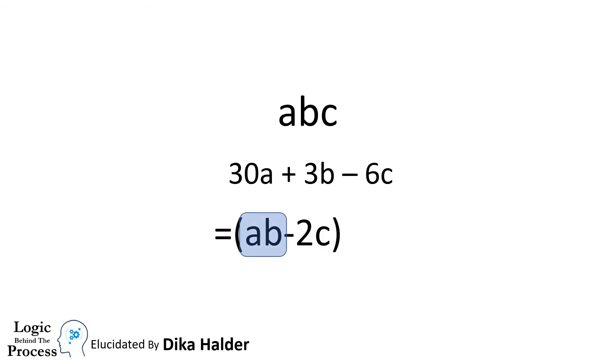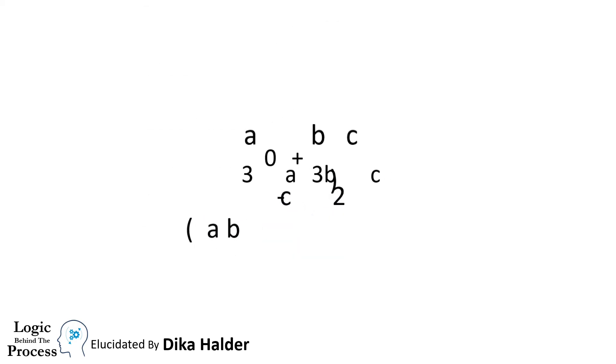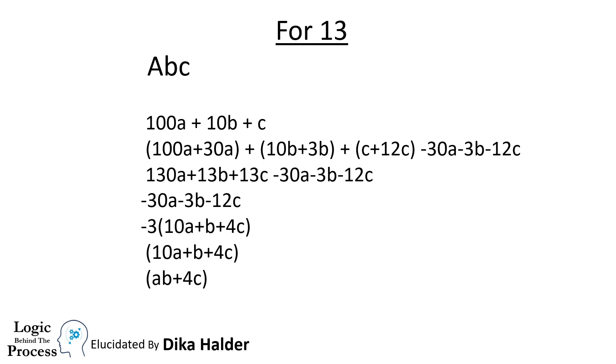Now look, here a and b are respectively the hundreds and tens digit, and c is the units digit. And here we can see we double the unit digit and subtract it from the number formed by the tens and hundreds digits. And that's how we have made the divisibility rule of 7. Now with this same method, we can also understand the logic of the divisibility rule of 13.